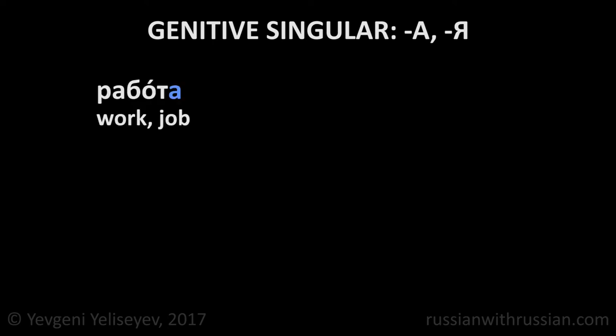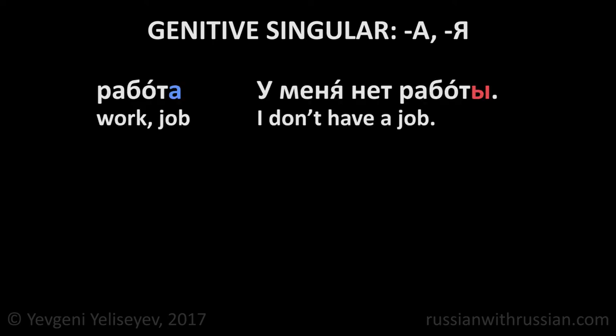And now let's examine some examples of genitive singular formation. I will show you the most used patterns. If you saw my previous lessons, some of them will seem familiar to you. We will start from nouns ending in А or Я. For example: работа — I have a job. У меня нет работы. I don't have a job.